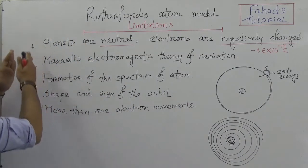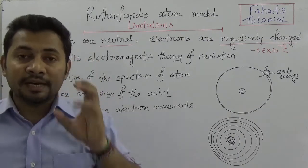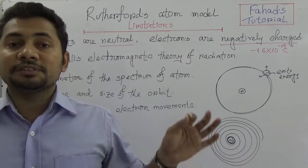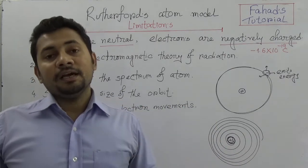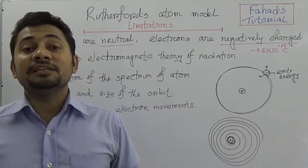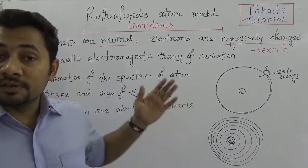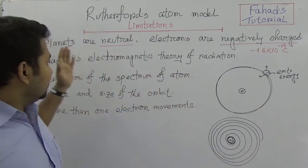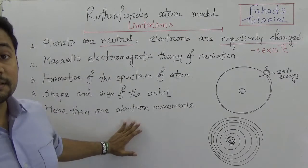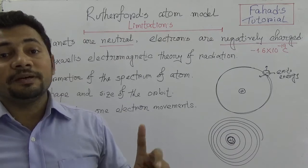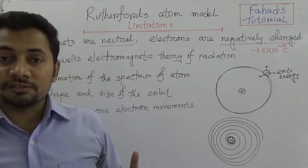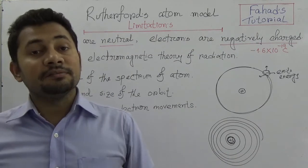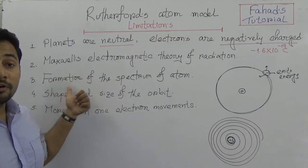To summarize, these five key points will help you answer questions in your exam. If the question asks about the limitations of Rutherford's atom model, or why the Niels Bohr atomic model is more acceptable, you need to state these limitations. First: planets are neutral but electrons are negatively charged. Second: Maxwell's electromagnetic theory of radiation. Third: Rutherford gave no idea regarding the formation of the spectrum of the atom.